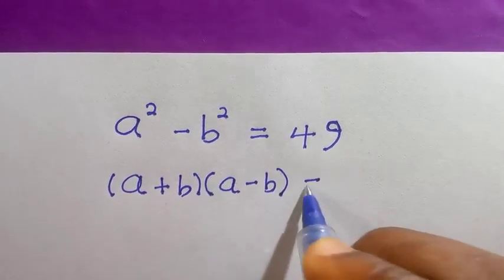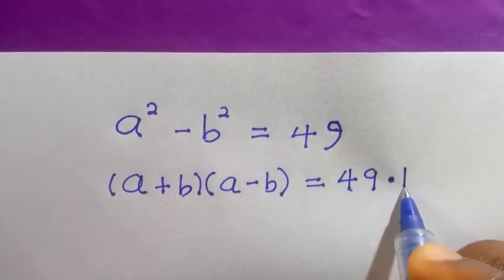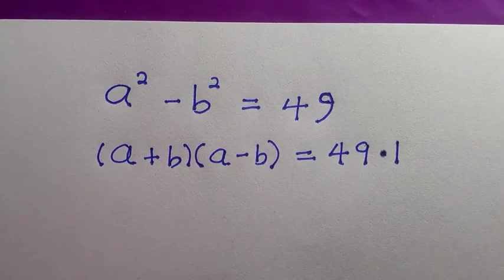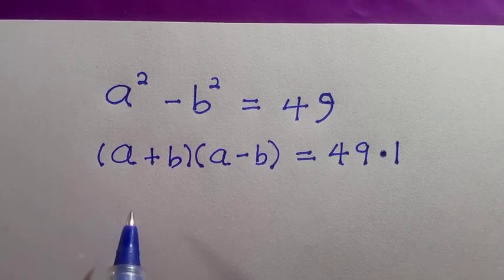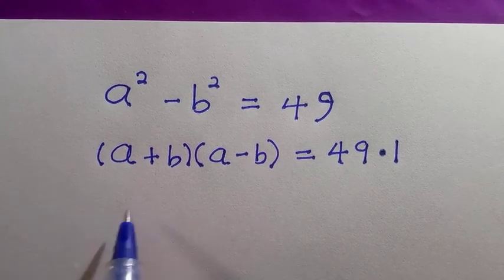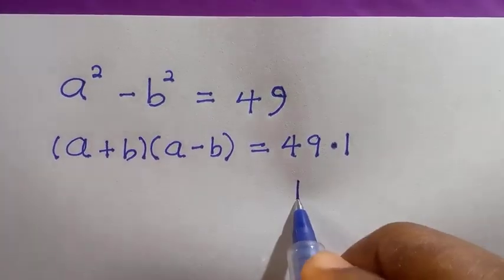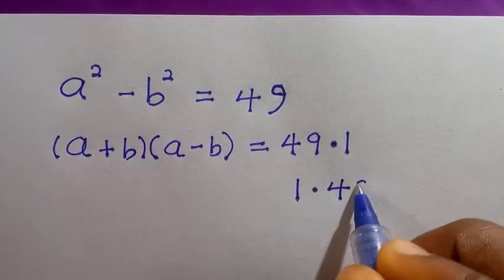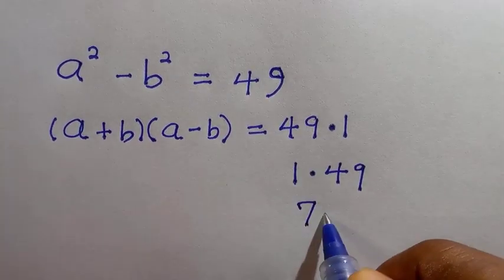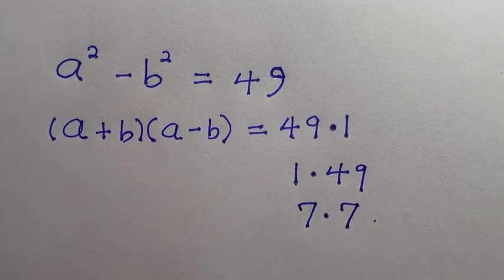So (a + b)(a - b) equals 49. In this problem, a squared minus b squared is the difference of two squares, and we have 49 here. The possible factor pairs of 49 are: 49 multiplied by 1, or 1 multiplied by 49, and also 7 multiplied by 7.